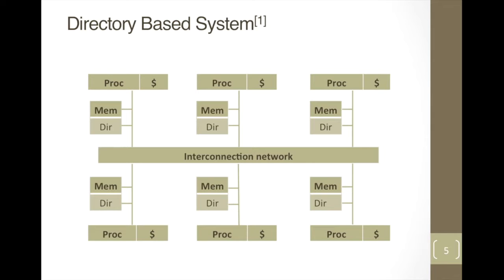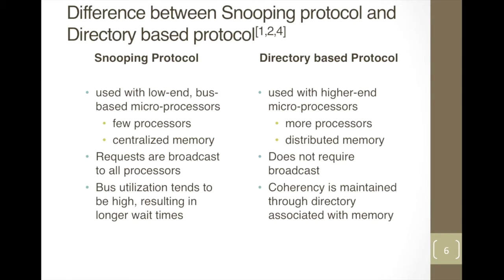The interconnection network routes traffic between different nodes. The communication between nodes is point-to-point communication. Now let's look at the difference between snooping and directory-based protocol.